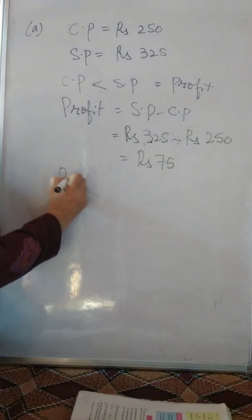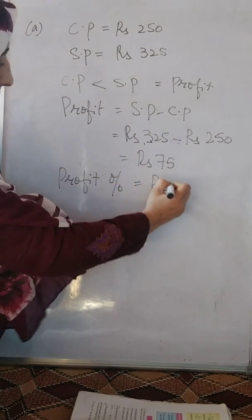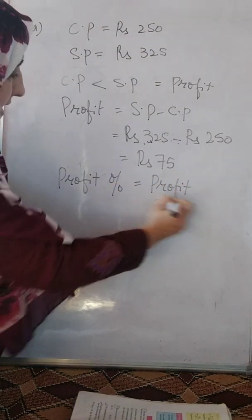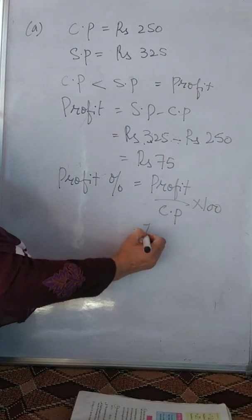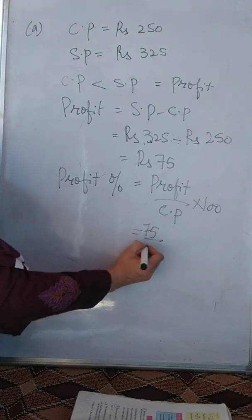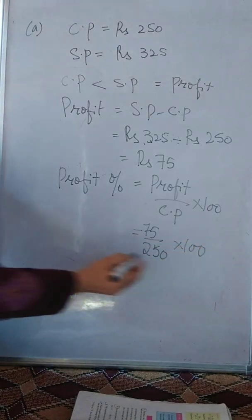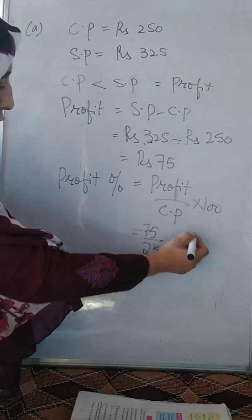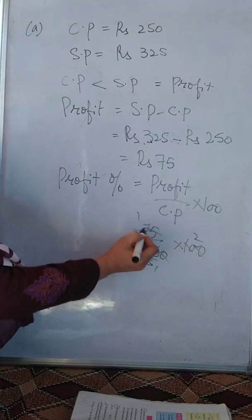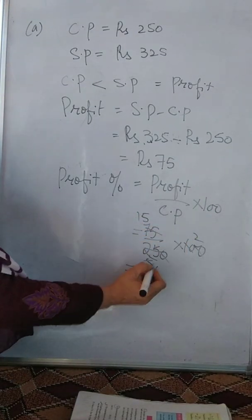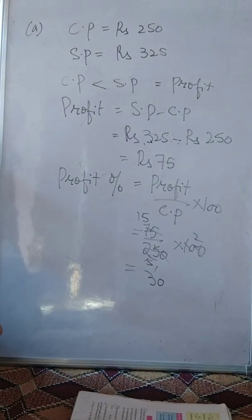Ab hame nikaalengi profit ki percentage. Toh uske liye formula hai profit divided by actual, that means CP into karenge 100. Profit 75 by 250 into 100. Yahaan par iski cancellation kariyayi. Zero or zero cancel karitayi. 5, 2 are 10. 5, 5 are 25. 5, 1 are 5. 15 into 2 is equal to 30. Iska matlab, 30 percent ka hamein fayda hua hain.